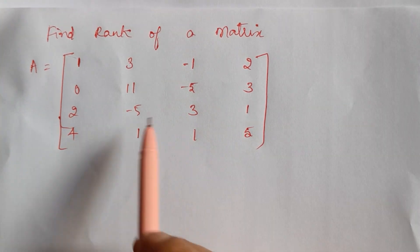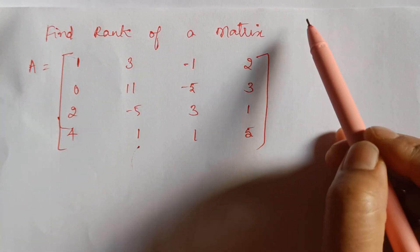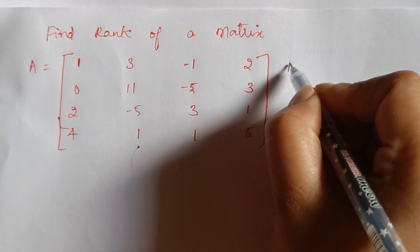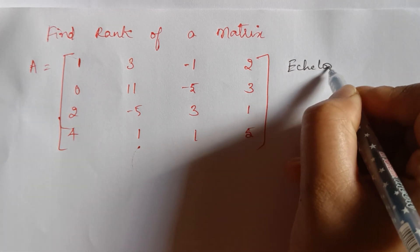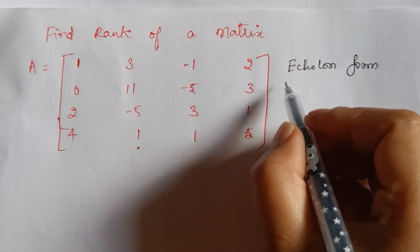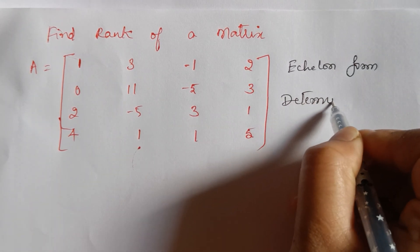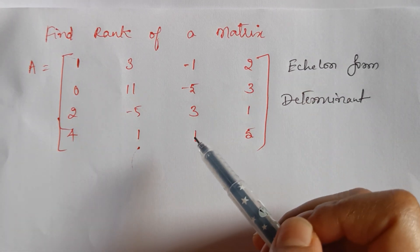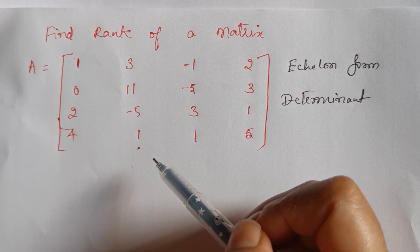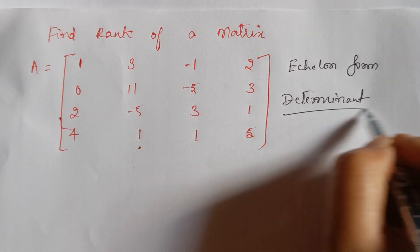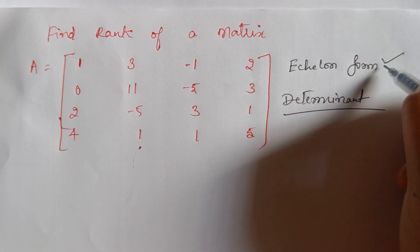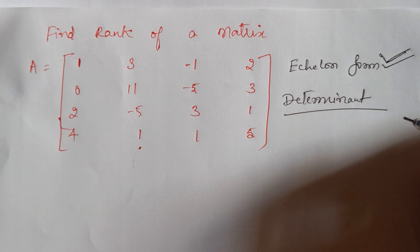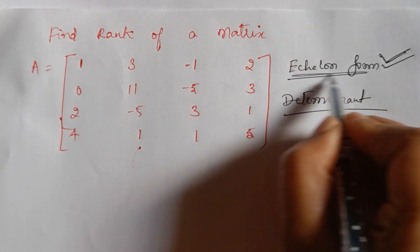So I have to find the rank of this matrix. As you can see in the question, there is no method given for what method we have to use, so by default the method is the echelon form. We also have the determinant method, but it makes things very complicated for bigger-size matrices — a little bit manageable for 3×3, but if you go further it becomes more and more complex. So the echelon form is the recommended method to use.